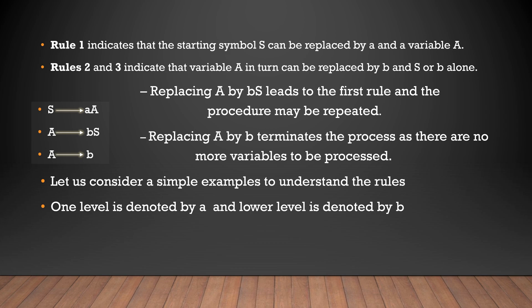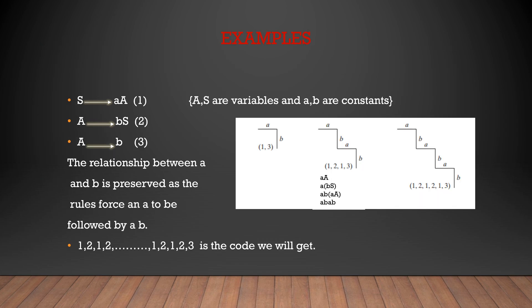To understand how this works, let us look into some examples. Consider rule 1 as code 1, rule 2 as code 2, rule 3 as code 3. We should maintain the relation between a and b preserved as the process continues. If we observe the middle figure, the code given is a, b into a, b. So we need to represent this in terms of numbers — that is 1, 2, 1, 3. Now we will see how we got 1, 2, 1, 3.